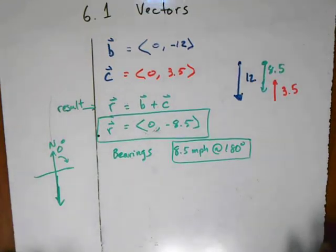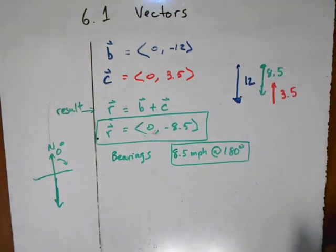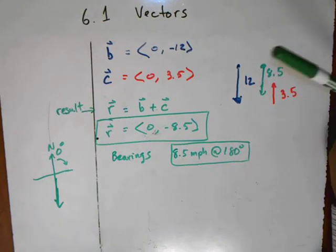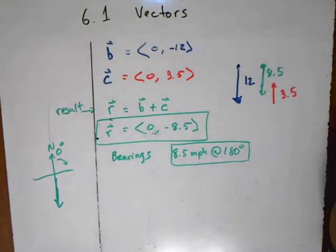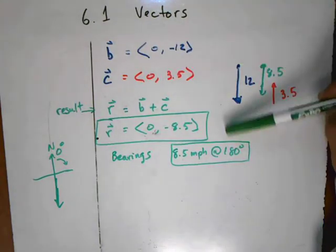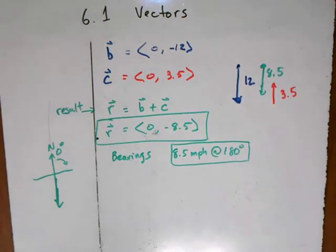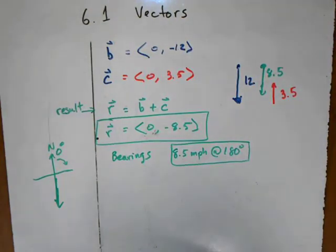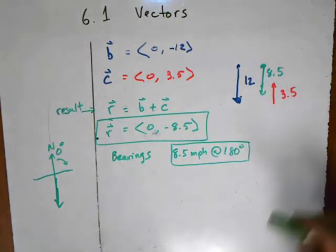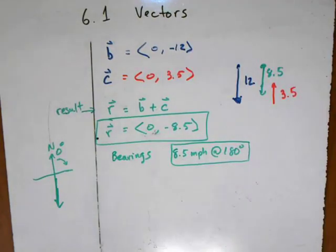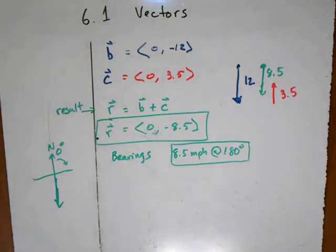It might seem like overkill — we didn't really need to draw pictures or work with vectors here because we can just say they're going against each other, so subtract the two. That's certainly true in this case, but it is only true because they're going directly at each other. This process can be applied to more complicated examples when they're not going directly at each other. So let's take a look at one of those examples.